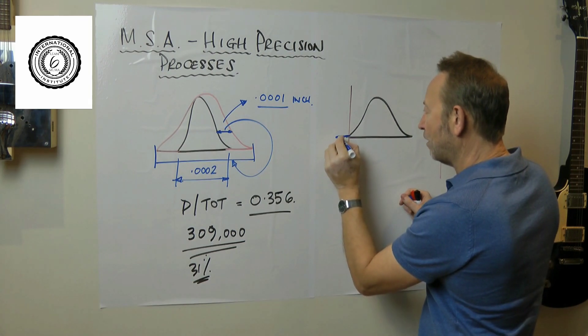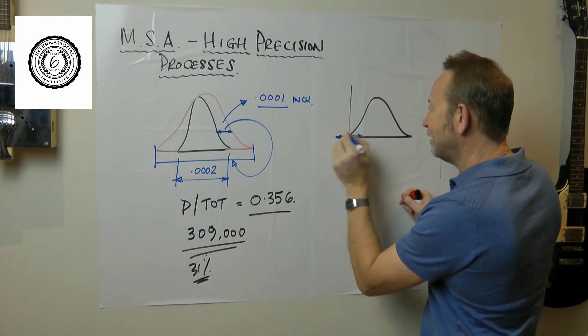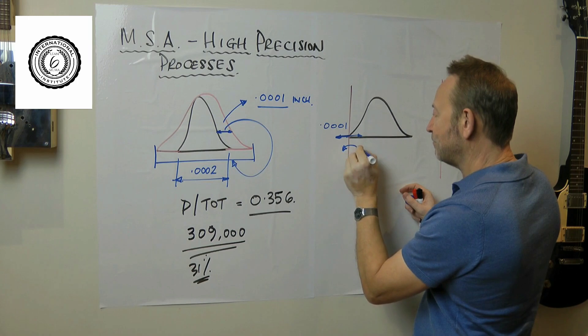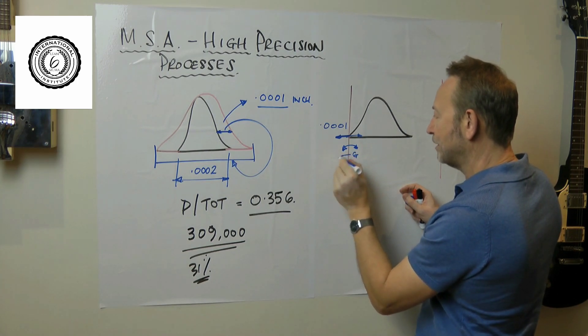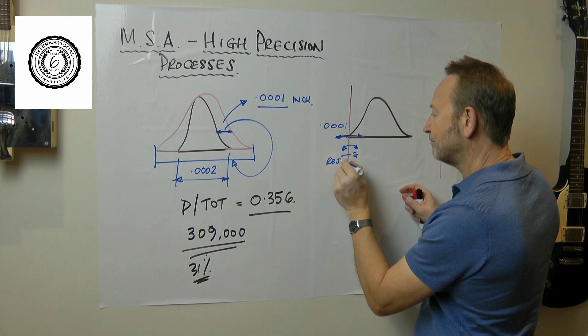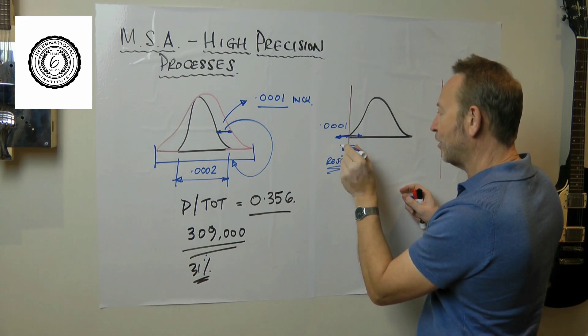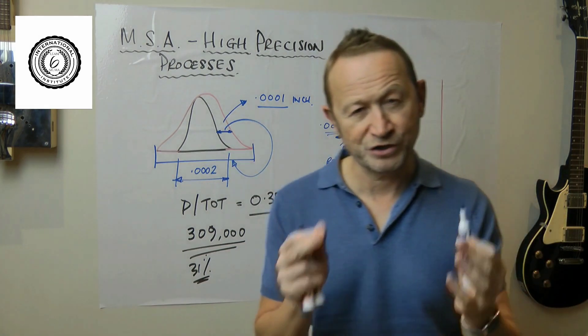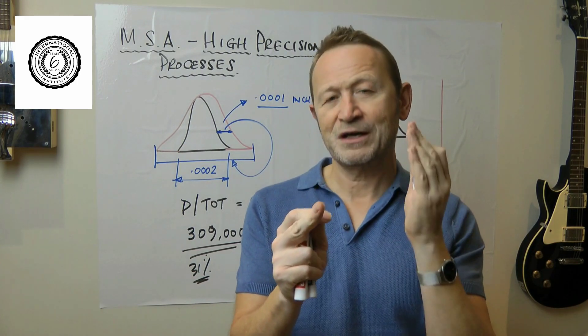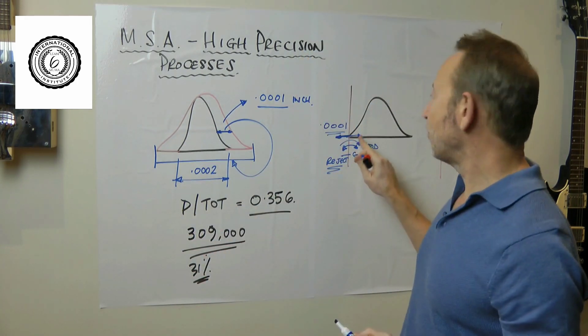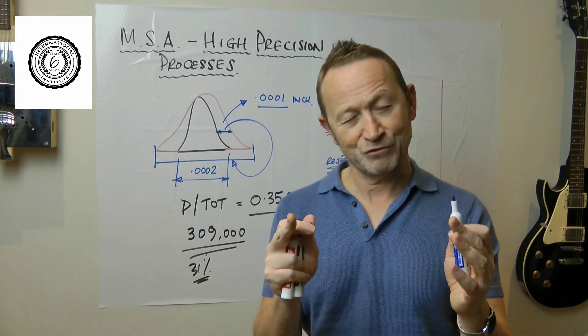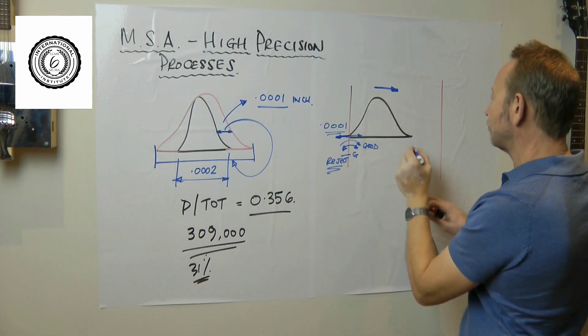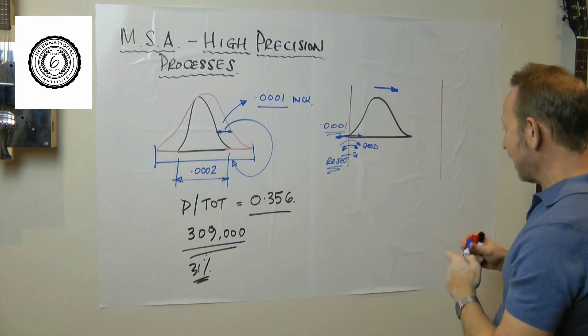You're going to misclassify. You're going to think a good one is actually a reject, or you're going to take a rejectable item and make it a good one. That is the misclassification risk. That misclassification risk is amplified by the fact that you are sitting to the left inside the tolerance. So in this case, if we get the machinist to move the process and center it so that we end up with a set of results equidistant from the tolerance...